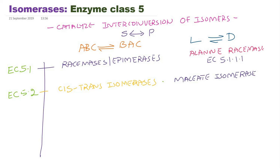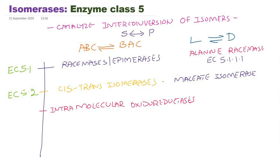Those enzymes which catalyze intramolecular oxidoreduction reactions are called intramolecular oxidoreductases. Don't confuse these with class 1 enzymes, which are oxidoreductases. Here they are called intramolecular oxidoreductases because within the same molecule electrons are transferred from one part of the molecule to the other part of the molecule.